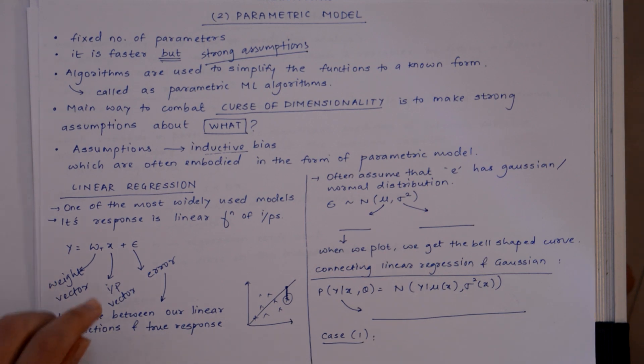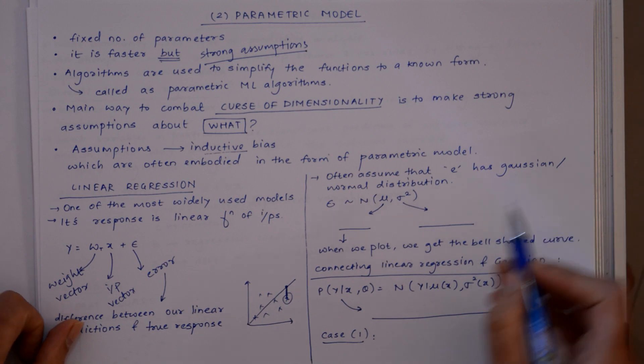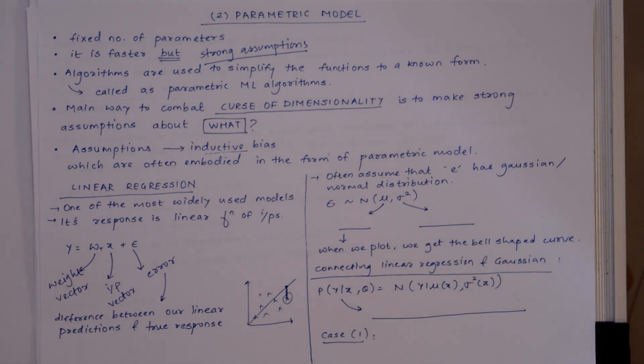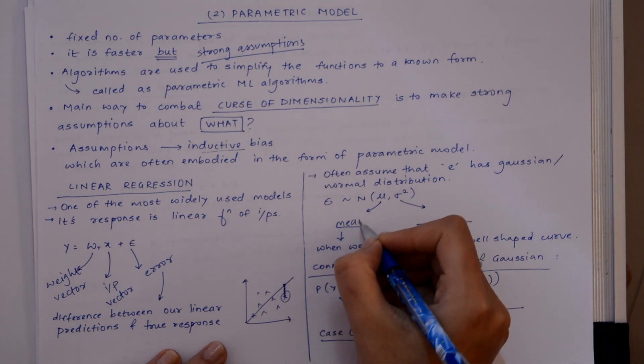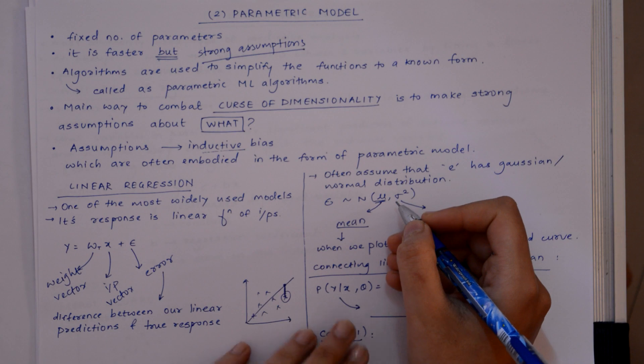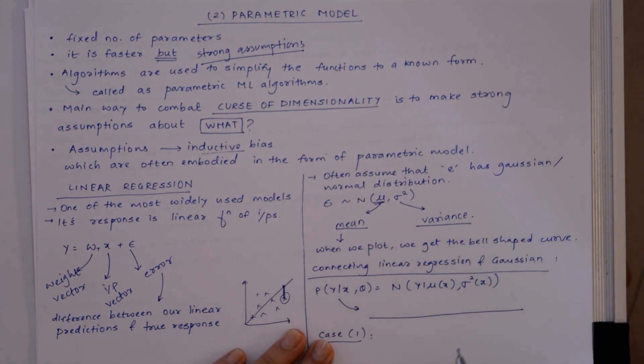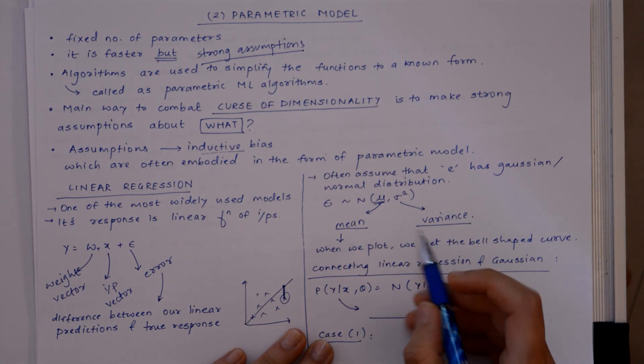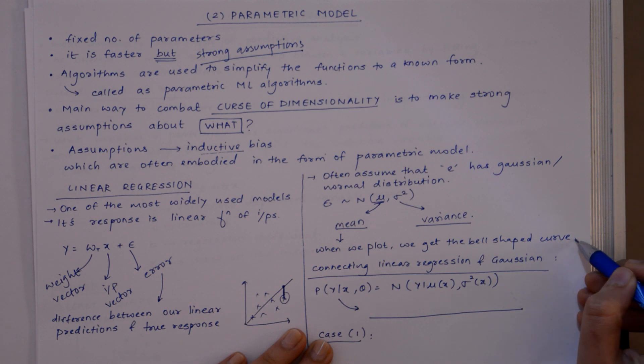Now we often assume the error as Gaussian or normal distribution, that is given by this formula. Here, this is the mean and this is the variance.